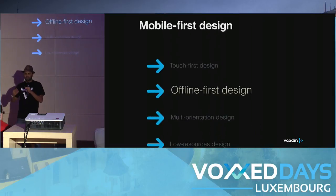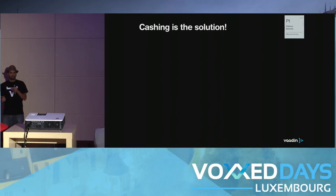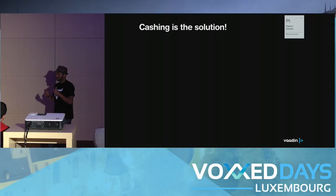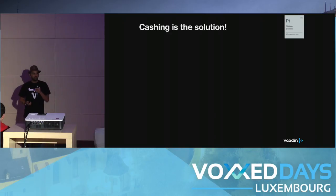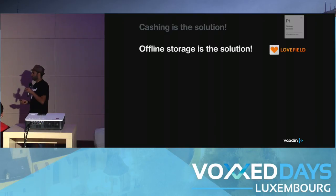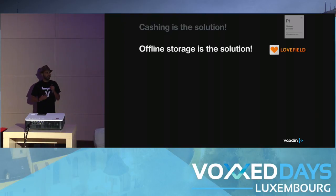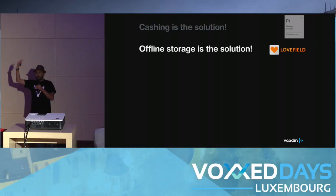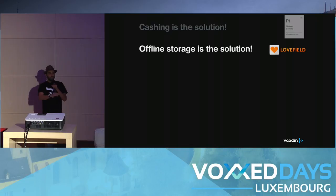Let's get back to offline first. It looks like the Platinum element is the solution — just use it and get a nice offline application. But no, this is not true, because caching is probably for small websites. If you have data and a relational database, how can you navigate the application if it's totally offline? That's why Google created Love Field — an open source library, fully written in JavaScript, where you can have a relational database inside your browser. When the application goes offline, a copy of your server database lives inside your browser and you can manipulate data offline.